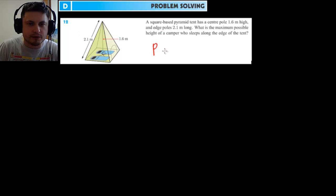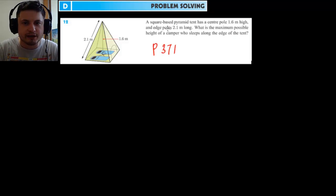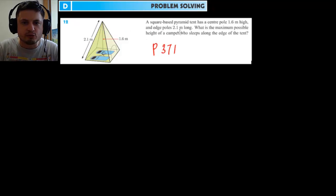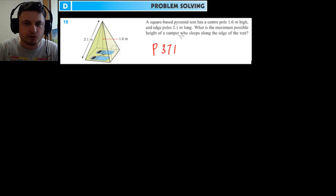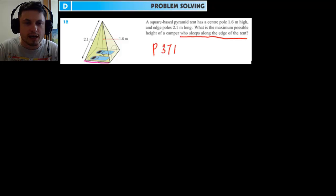That's the two-dimensional problem. Now let's try a three-dimensional problem: page 371, number 12. A square-based pyramid tent has a center pole 1.6 meters high and an edge pole 2.1 meters long. We need to find the maximum possible height of a camper who sleeps along the edge of the tent. The edge of the tent is along this line here — not the center — and there's even a picture showing two sleeping bags.